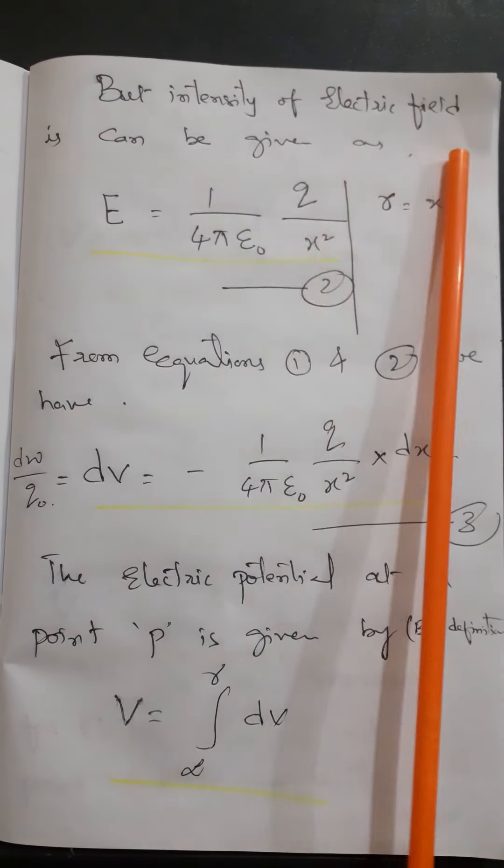From equations 1 and 2, this is the small work done for a unit positive charge. So dV equals minus E, which gives dV equals minus of 1 by 4 pi epsilon-naught times Q by X squared, into dx. Let us take that as equation number 3.